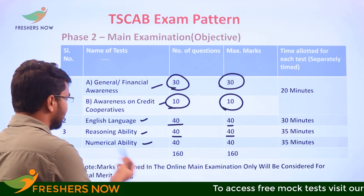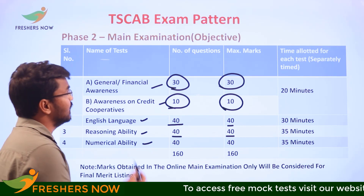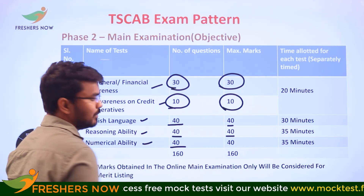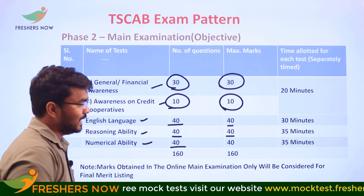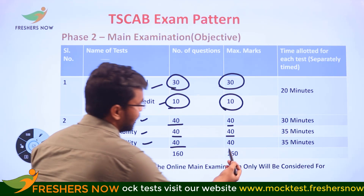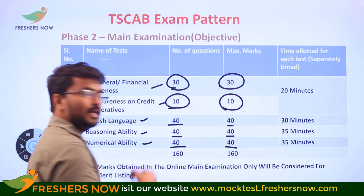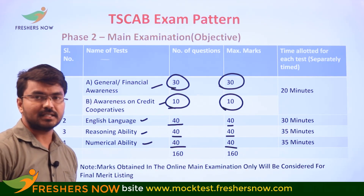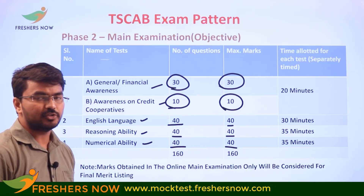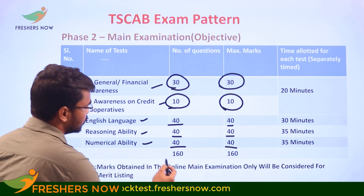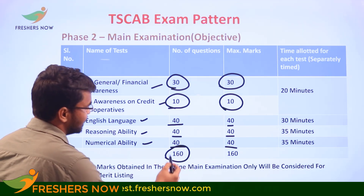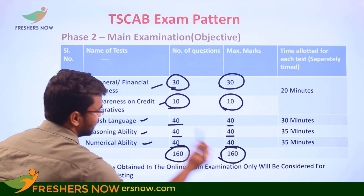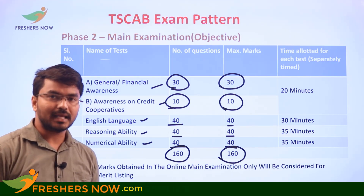Next, Numerical Ability in the mains exam has 40 questions for 40 marks, with a time allowance of 35 minutes — with 20 minutes allotted section-wise. The total number of questions in the mains is 160 for 160 marks.